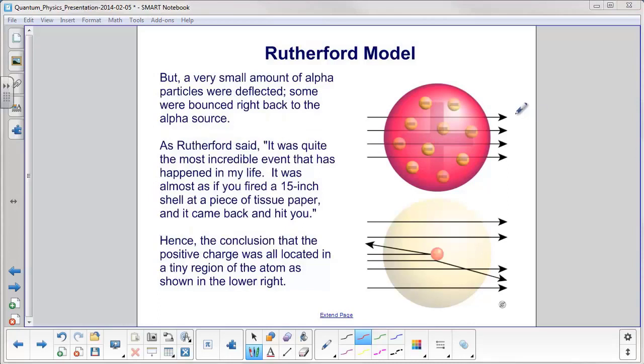However, instead of observing this, where the alpha particles would all come out here, what was observed was some were deflected. You can see this arrow here. We're going to look at the bottom picture here. This is what actually happened in the experiment. And a very few came right back at the alpha source like this. And to quote Rutherford, because this is one of those very famous statements, it was quite the most incredible event that has happened in my life. It was almost as if you fired a 15-inch shell at a piece of tissue paper, and it came back and hit you.